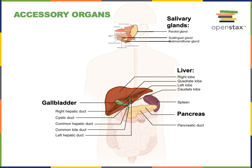The liver produces bile, and bile is important for emulsifying lipids, which facilitates the chemical digestion and absorption of lipid-soluble nutrients. Bile enables emulsification — that is, it enables lipids to become suspended in small droplets mixed throughout a watery solution. This enables the digestive enzymes to access lipid-soluble nutrients.